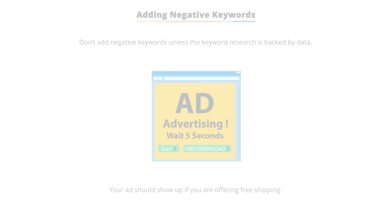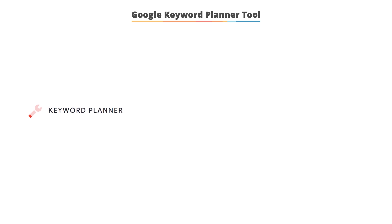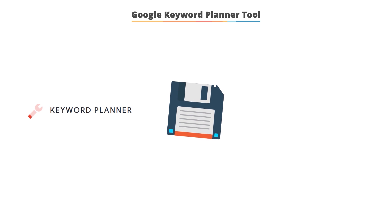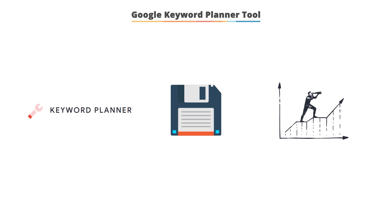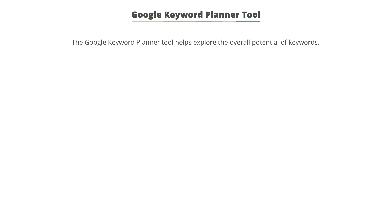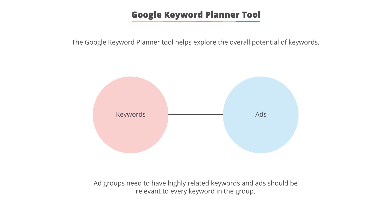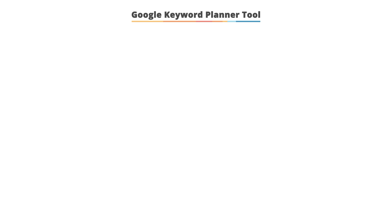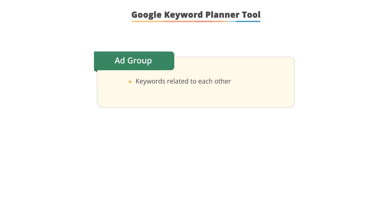The keyword planner tool allows you to easily research keywords, organize them into ad groups, save the ad groups to your account, or get click and budget forecasting for a set of words. The keyword research tool is very useful to explore the overall potential reach, budget, and bids of keywords. Since keywords and ads should be highly related to each other to ensure your advertising is relevant, you want to create ad groups that have small sets of highly related keywords, so that the same ad is useful for every keyword in the ad group.